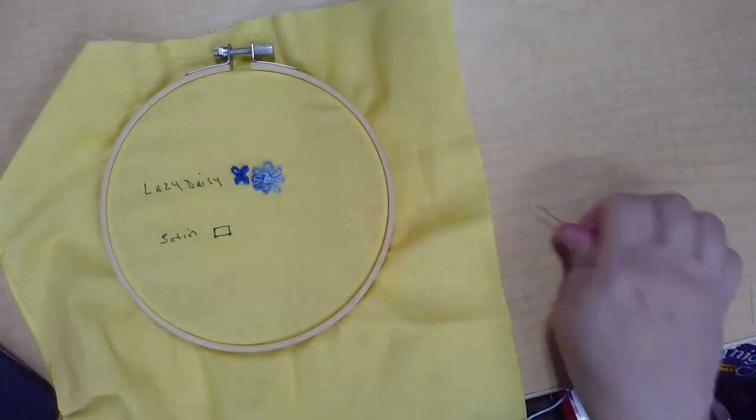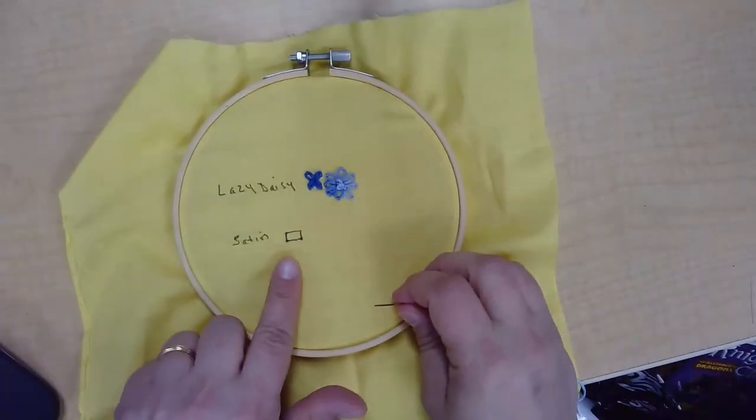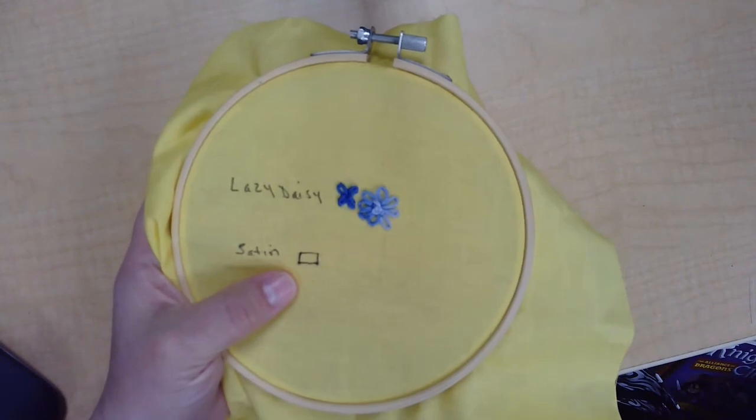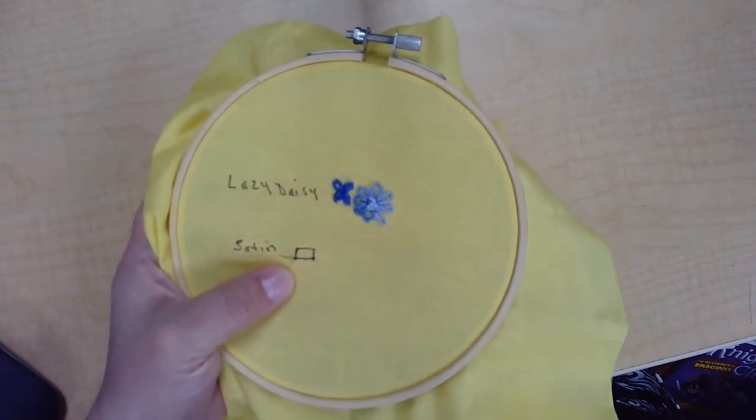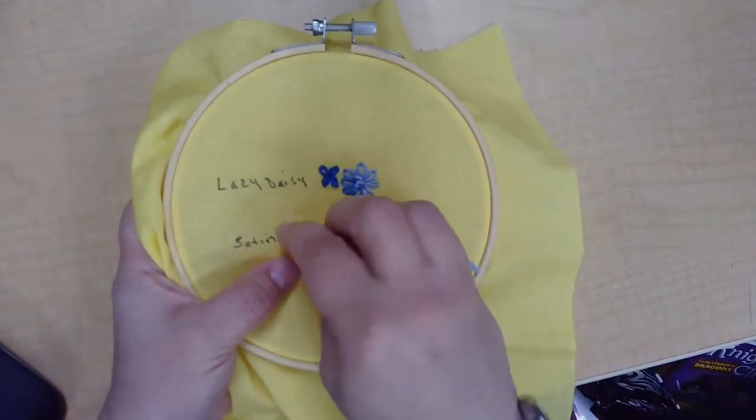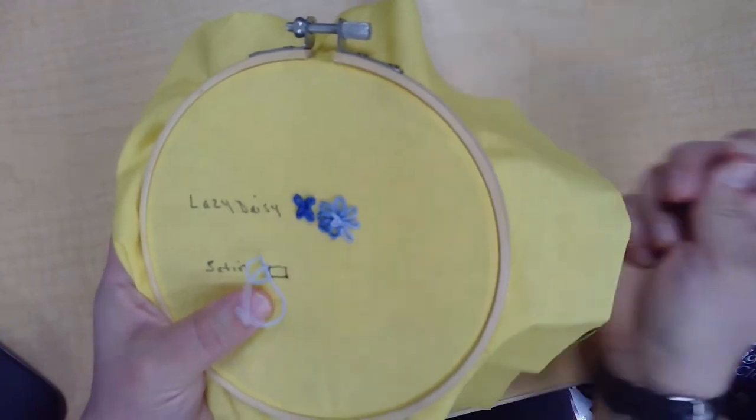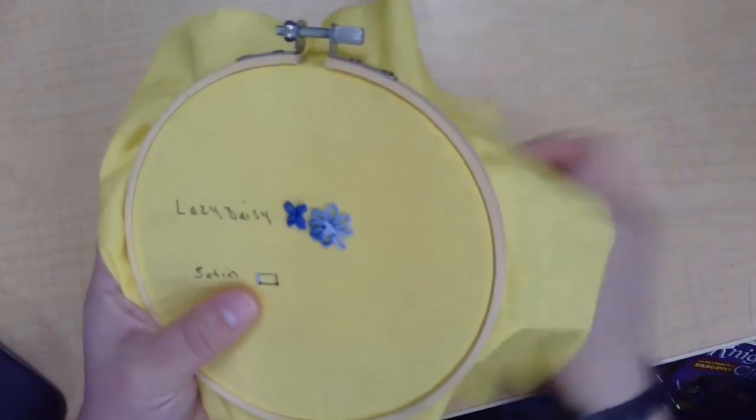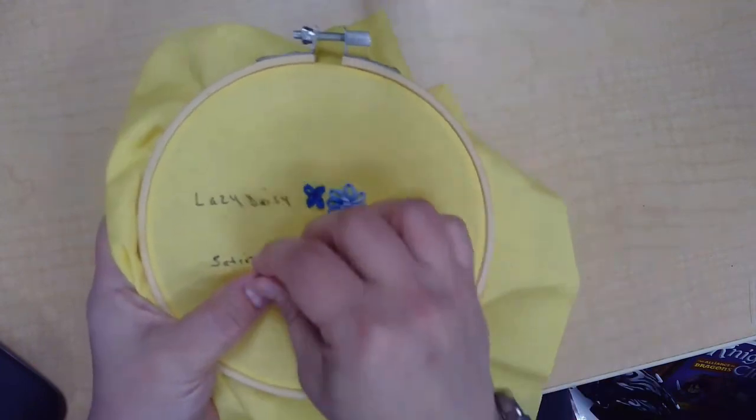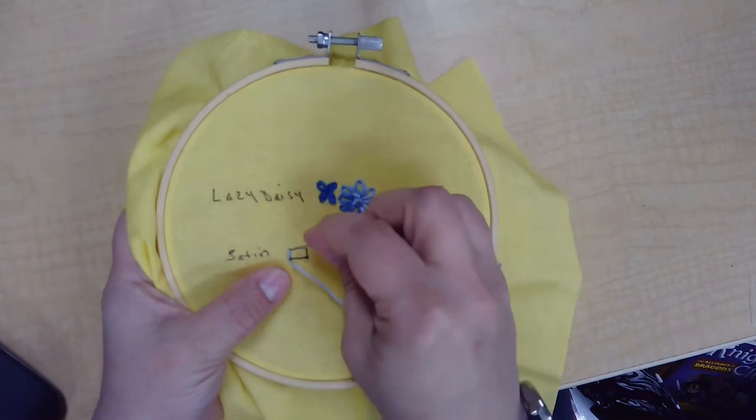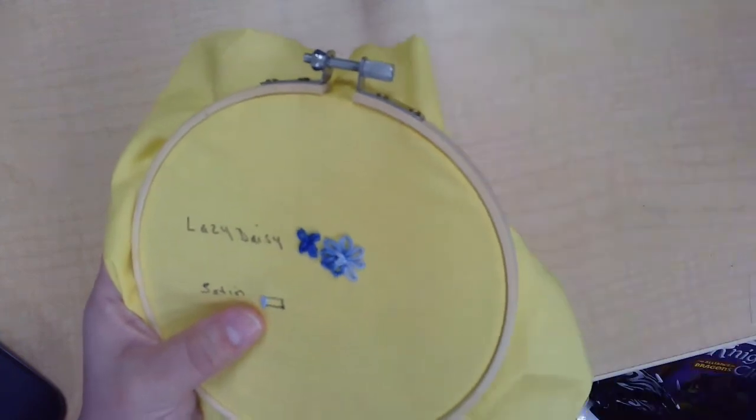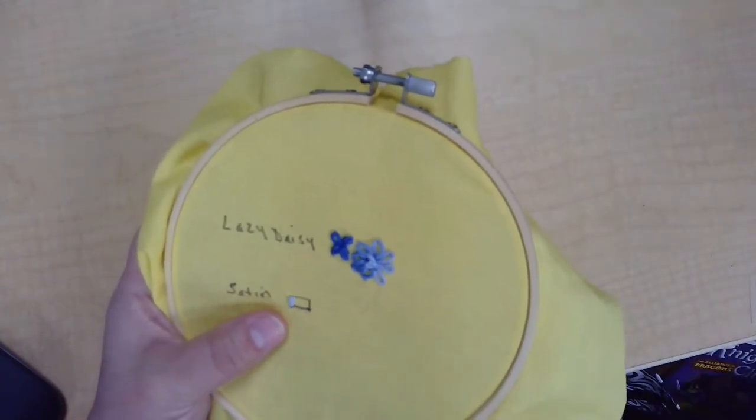Now we're going to learn the satin stitch. The satin stitch is probably one of the easiest ones to do, and it's great for filling in shapes. For the purpose of this, I drew a little rectangle here so that you could see shapes being filled in. Basically, you're just going to come up one end of your shape and go down the other. And you're going to do the next stitch right next to that one. And each stitch is going to be as close to the last one as you can make it. So that it ends up looking like one solid piece of fill.